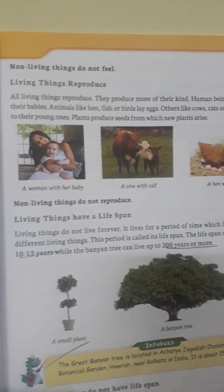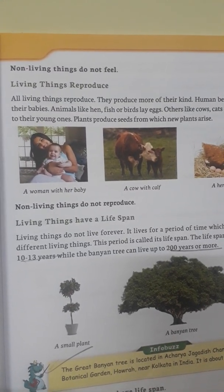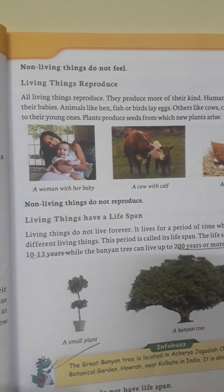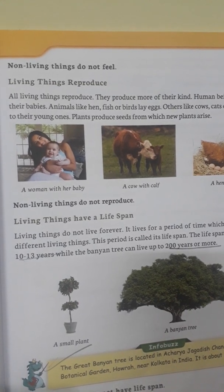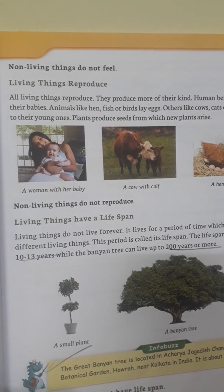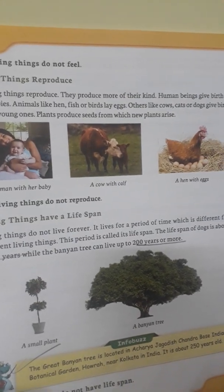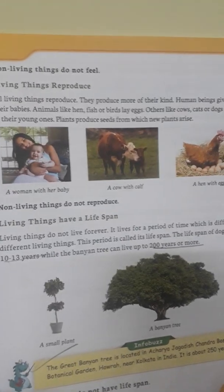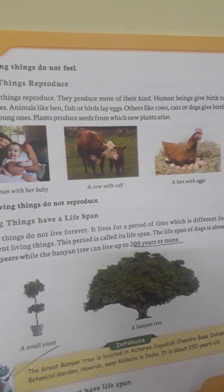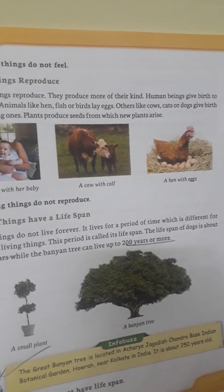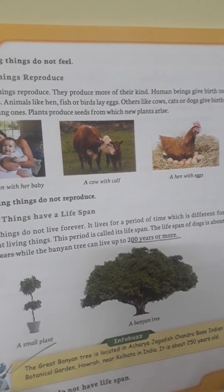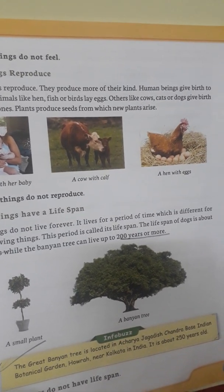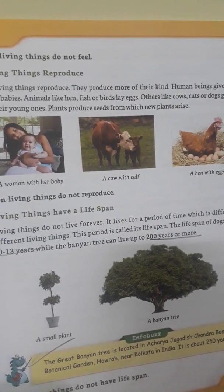You can see the picture of a woman with her baby, a cow with her calf, and a hen with eggs. Non-living things do not reproduce. Coming to the last point: living things have a life span. Living things do not live forever — they will die one day. They live for a period of time which is different for different living things; this period is called a life span. For example, the life span of a dog is about 10 to 13 years.